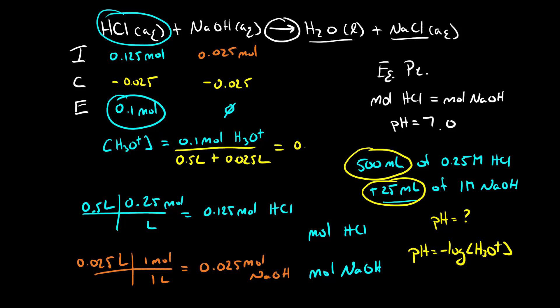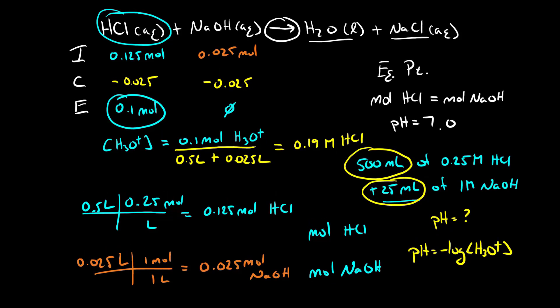Now from this we can calculate our pH. So our pH equals the negative log of that value and our pH is equal to 0.72.